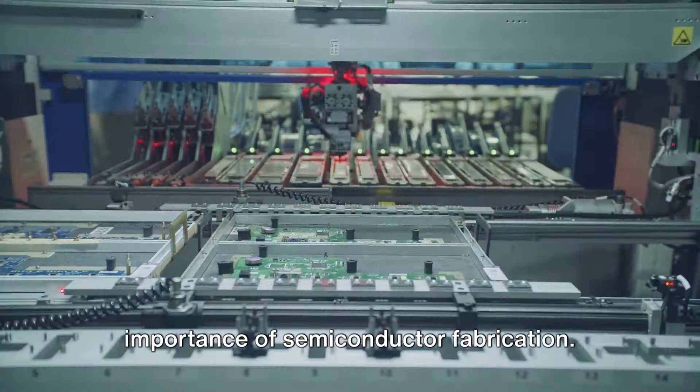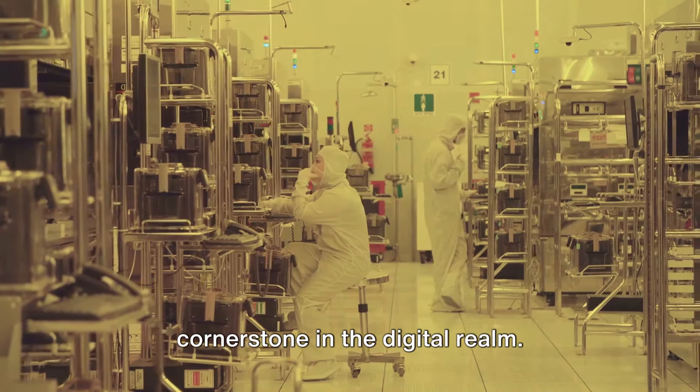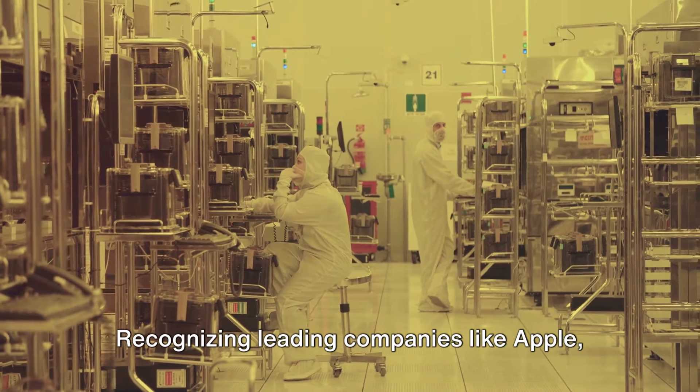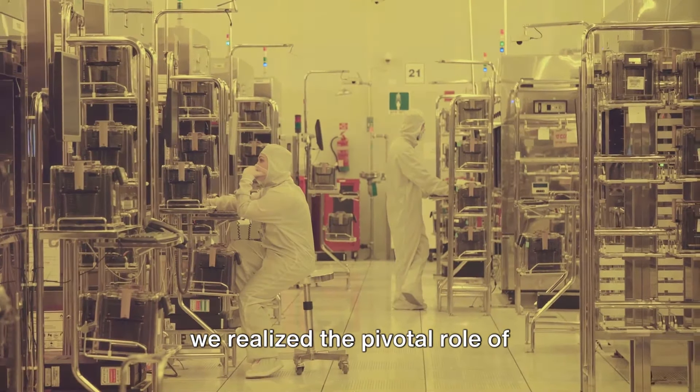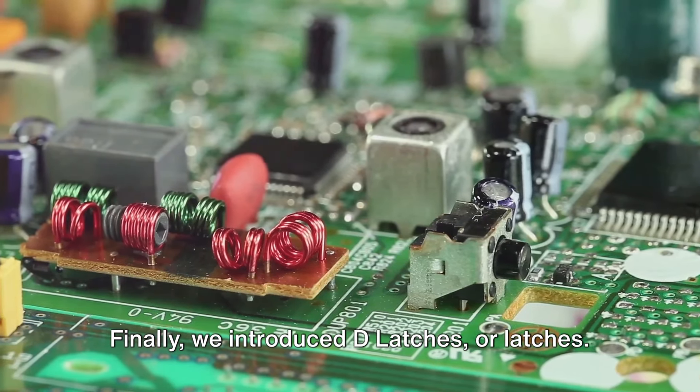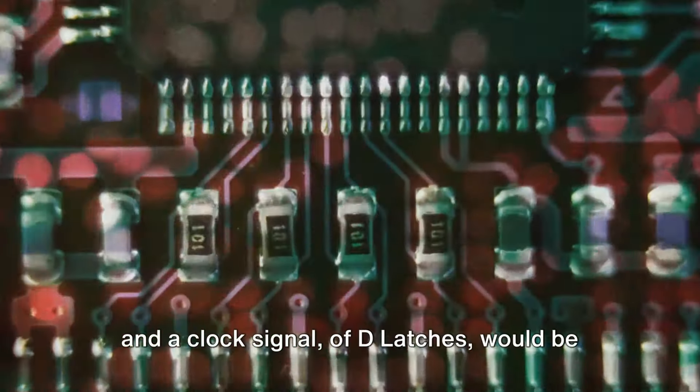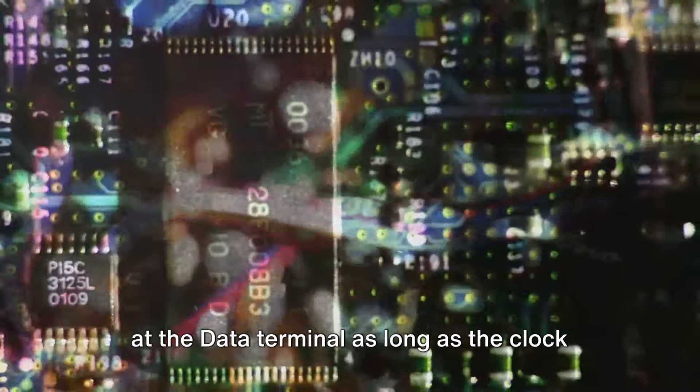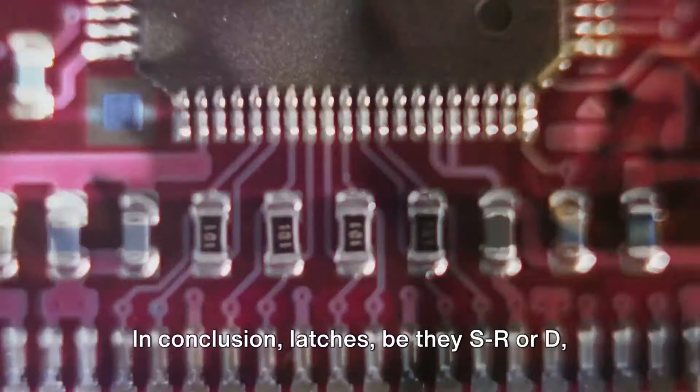Venturing further, we discussed the importance of semiconductor fabrication. We considered the capacity to produce a large quantity of semiconductors is a cornerstone in the digital realm. Recognizing leading companies like Apple, Qualcomm, AMD, Samsung, and Taiwan's TSMC, we realized the pivotal role of semiconductors in our digital age. Finally, we introduced D-Latches. A diagram comparing the SR and D-Latches, showcasing the two inputs, data, and a clock signal of D-Latches, would be a great visual aid. Remember, these latches follow the input at the data terminal as long as the clock signal is high. This adds another dimension of complexity and functionality to our digital systems.